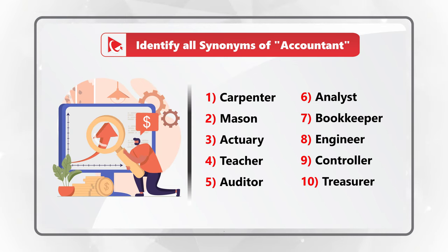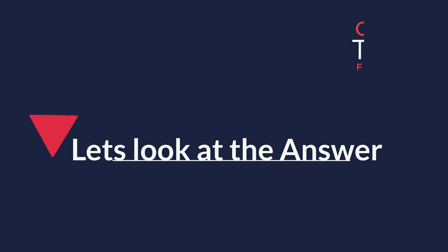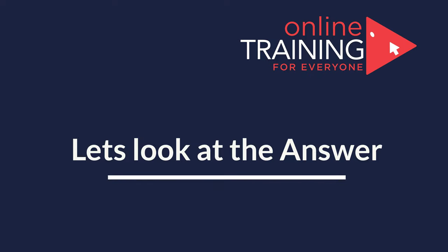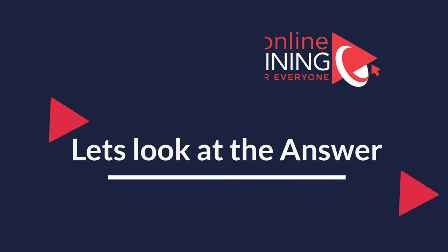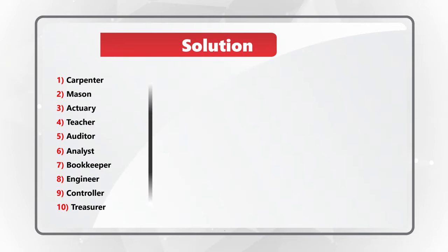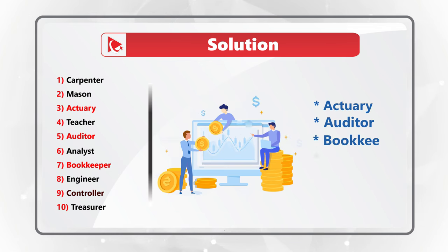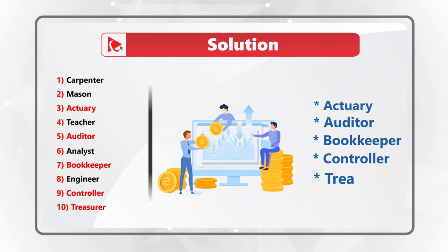Give yourself a little bit of time — maybe pause this video — because there could be between 1 and 10 answers. I am going to move forward and share my solution. I found 5 similar words: actuary, auditor, bookkeeper, controller, and treasurer. I believe these words are similar because they represent financial jobs in the organization.